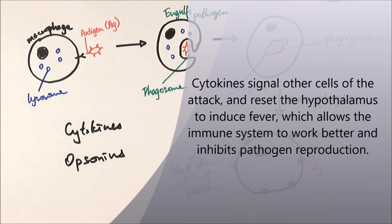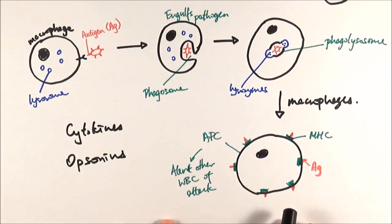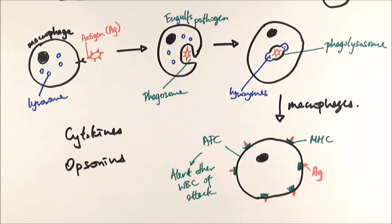Cytokines can also reset the hypothalamus in the brain to cause a fever, which basically enhances our immune system and also inhibit pathogen reproduction. And there you have it!